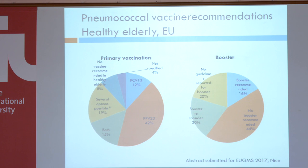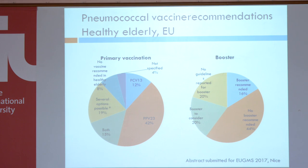There are some countries with varying options, and no recommendations to vaccinate in 8% of European countries. What about the strategy to revaccinate? A booster is recommended in 16% of European countries. No booster is recommended in 44%, and you could consider open boostering in 20% of European countries. This underlines the variation in recommendations for pneumococcal vaccination in adults throughout Europe.